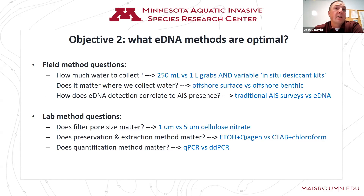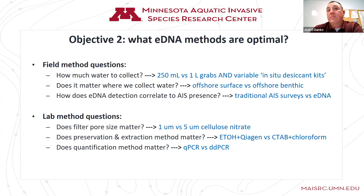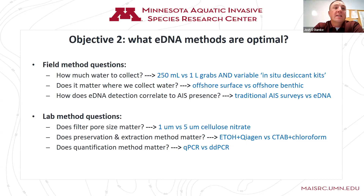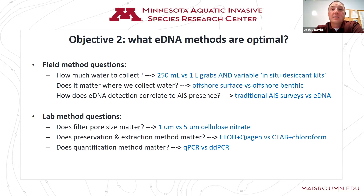It's possible that preserving in CTAB and doing a different type of extraction may yield more DNA from an individual filter than the ethanol and Qiagen kit extraction, but we're going to test that and see if it really makes a difference. And does quantification method matter? We're comparing conventional qPCR versus digital PCR — ddPCR. Most samples are processed through conventional qPCR, but we have some paired test groups also being sent through ddPCR. ddPCR is a much more sensitive method, so it might be better for early detection when DNA is at low abundances.